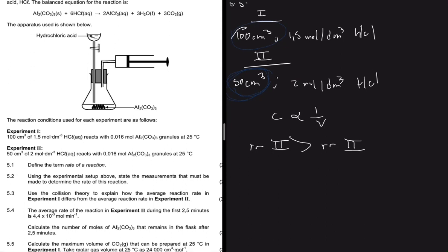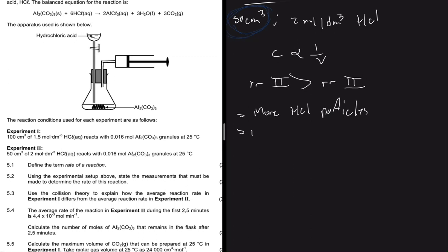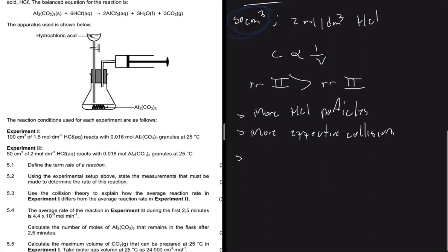There will be more HCl particles in experiment two because the concentration is higher. More particles lead to more effective collisions. Effective collisions are the prerequisite of a reaction, so the more effective collisions there are, the higher the reaction rate, and the reaction will take less time.